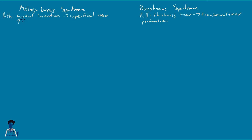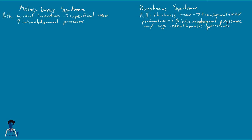Mallory-Weiss is usually secondary to an increase in intra-abdominal pressure. With Boerhaave, the perforation is a result of an increase in intraesophageal pressure with negative intrathoracic pressure. You can imagine: increased intraesophageal pressure with negative intrathoracic pressure causes the rupture of the esophagus.